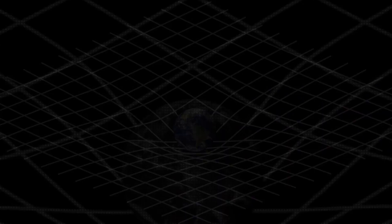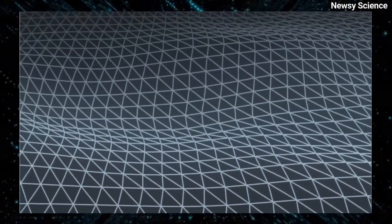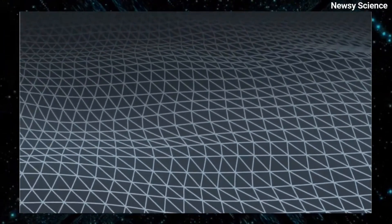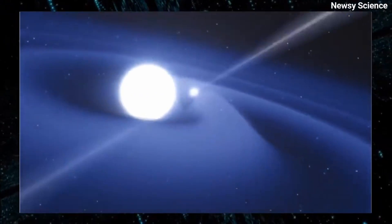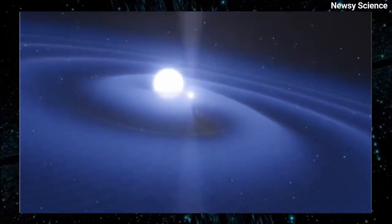According to Einstein's theory of relativity, space and time are interconnected and form a four-dimensional spacetime fabric. This spacetime fabric is not rigid and can be curved by the presence of massive objects. Because of the curvature of spacetime, objects move in a curved path rather than a straight line, which is the basis of gravity.